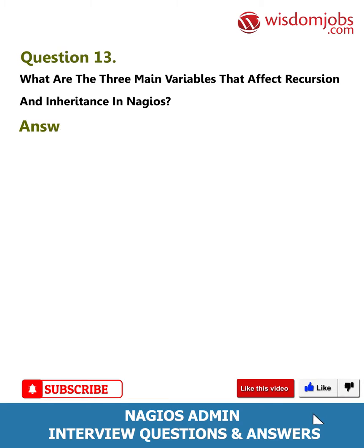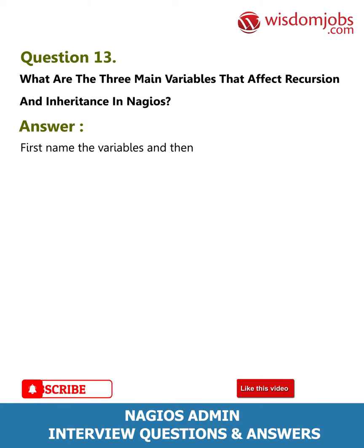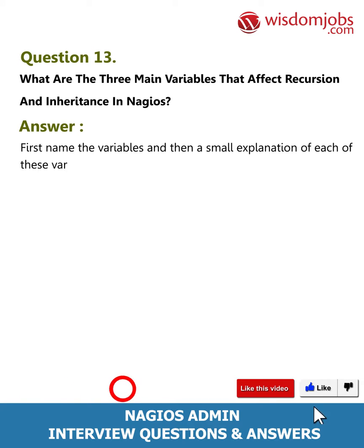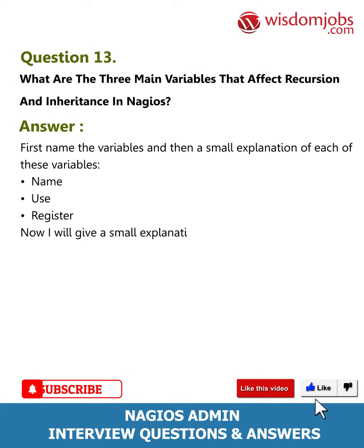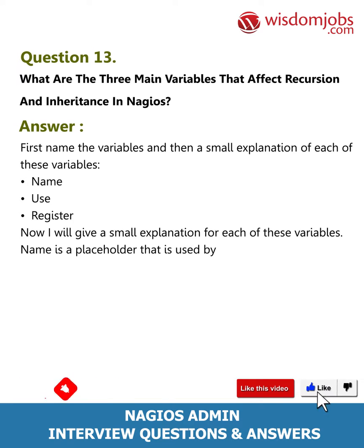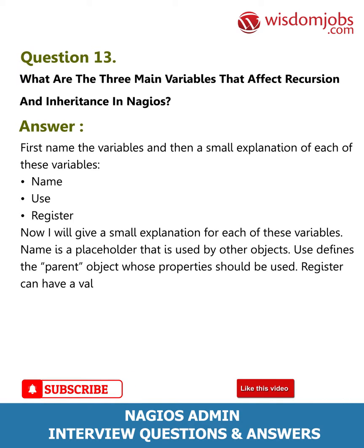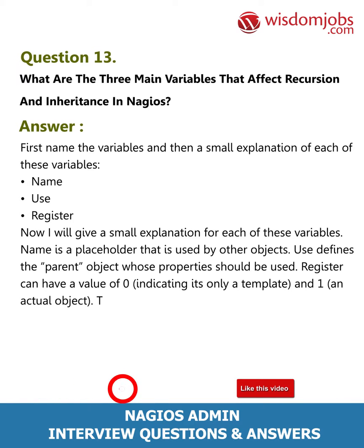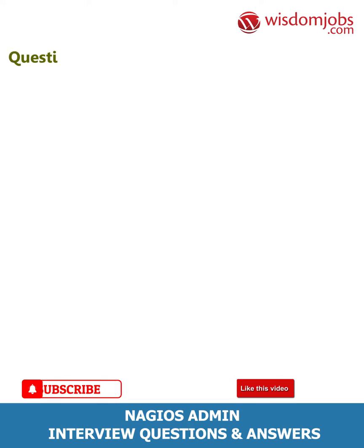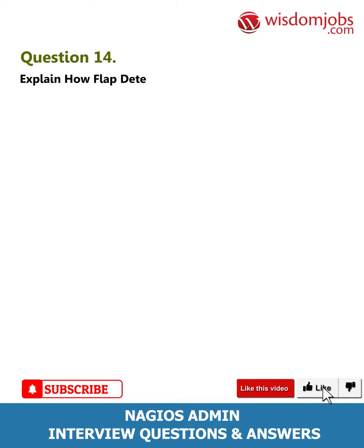Question 13: What are the three main variables that affect recursion and inheritance in Nagios? Answer: The variables are: name, use, and register. Name is a placeholder used by other objects. Use defines the parent object whose properties should be used. Register can have a value of zero, indicating it's only a template, or one, indicating it's an actual object. The register value is never inherited.